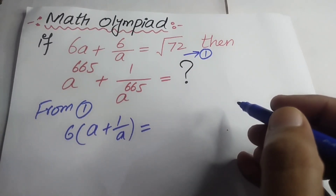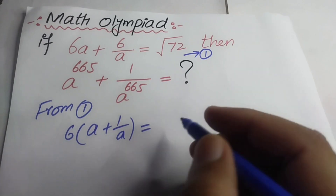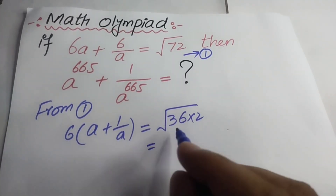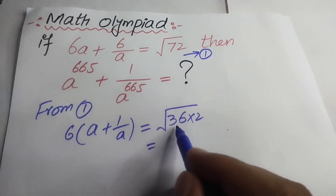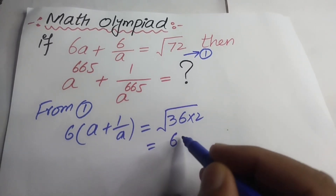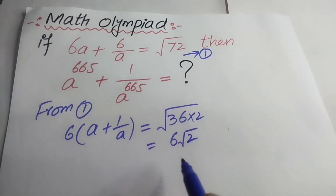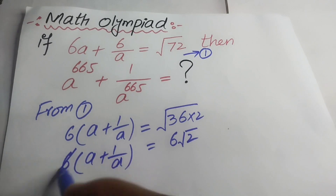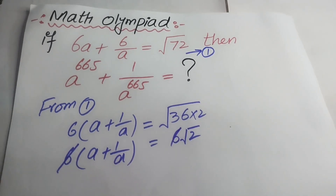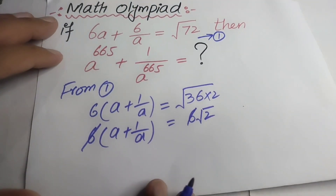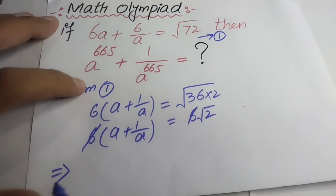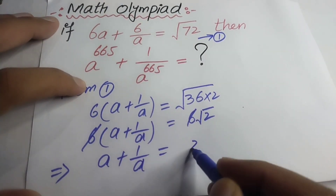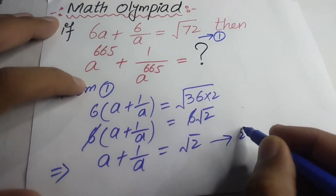...and here is our term √72. I can write √72 as √(36 × 2). We know that the square root of 36 is 6, and the square root of 2 remains as it is. The left hand side stays as it is, and this 6 cancels out on each side.